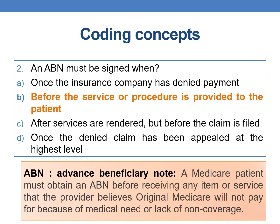Coming to the next question: an ABN must be signed when? Option A is once the insurance company has denied payment. Option B is before the service or procedure is provided to the patient. Option C is after services are rendered but before the claim is filed. Option D is once the denied claim has been appealed at the highest level. The correct answer is option B — an ABN must be signed before the service or procedure is provided to the patient.